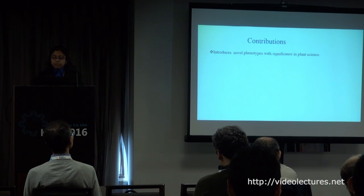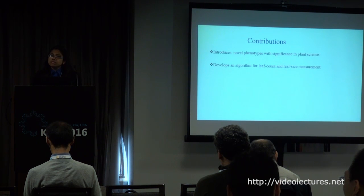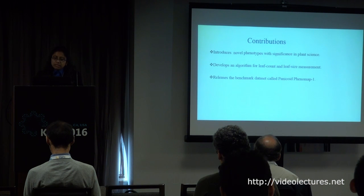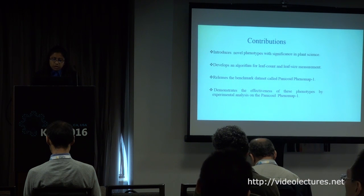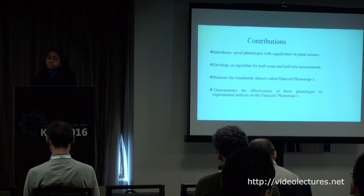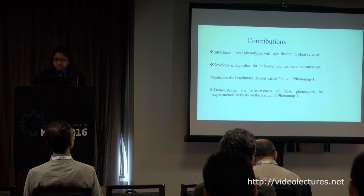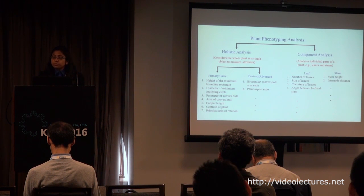Regarding contributions: we developed two fully automated software systems in OpenCV and C++ to introduce two novel phenotypes with a discussion on their significance from the viewpoint of plant science. We developed an algorithm to count the total number of leaves and measure the size of each leaf at different stages of the life cycle as the plant grows. We released our first benchmark dataset called Panicoid Phenomap 1, which is publicly available online. Experimental analyses are performed to demonstrate the effectiveness of these phenotypes regulated by genetic variation. We classify plant phenotyping analysis into two categories: holistic analysis and component-based analysis.